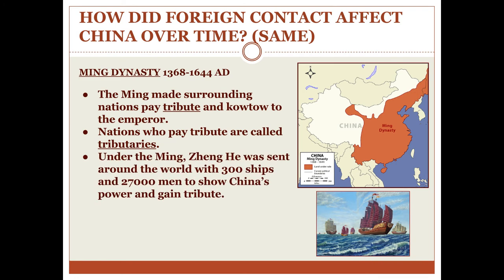Under the Ming Dynasty, a gentleman named Zheng He was sent around the world with 300 ships and 27,000 men to show the world how powerful China was and encourage the rest of the world to trade and pay tribute. He did this seven different times. It is believed that on one of these journeys he may have even reached the west coast of North America — California, Oregon, Washington — well before Christopher Columbus did. There is evidence to suggest the Chinese actually discovered America before Christopher Columbus.